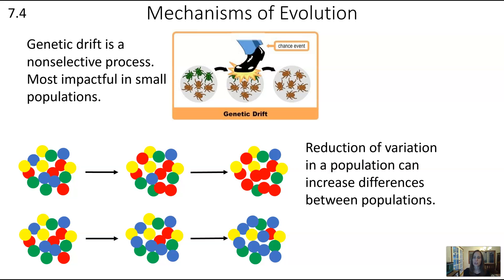Reduction of variation in a population can increase differences between populations. We see colorful shapes representing different alleles, and two populations that are identical at first. Over time, the top population gets more of the red allele and the bottom gets more of the blue allele. These differences may happen randomly, but they can build up and cause divergence between populations. If they build up enough so that those two populations can no longer interbreed and create viable fertile offspring, then you would have a speciation event — but we'll get into that in the speciation video.